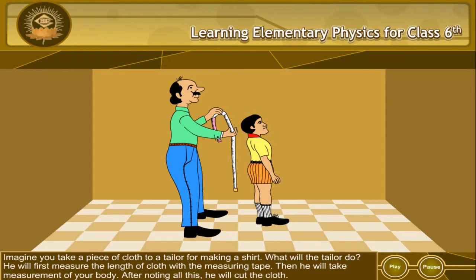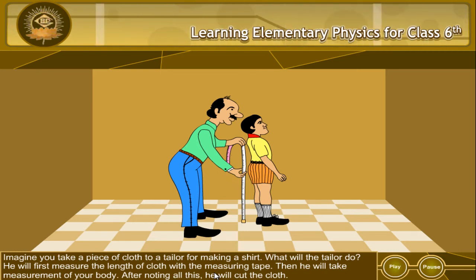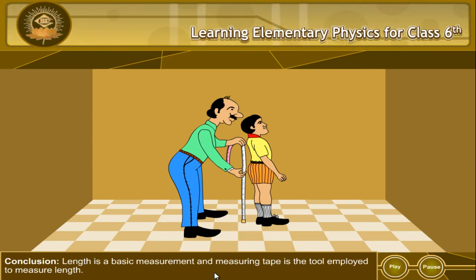Example 1. Imagine you take a piece of cloth to a tailor for making a shirt. What will the tailor do? He will first measure the length of cloth with the measuring tape. Then he will take measurement of your body. After noting all this, he will cut the cloth. Conclusion: Length is a basic measurement and measuring tape is the tool employed to measure length.